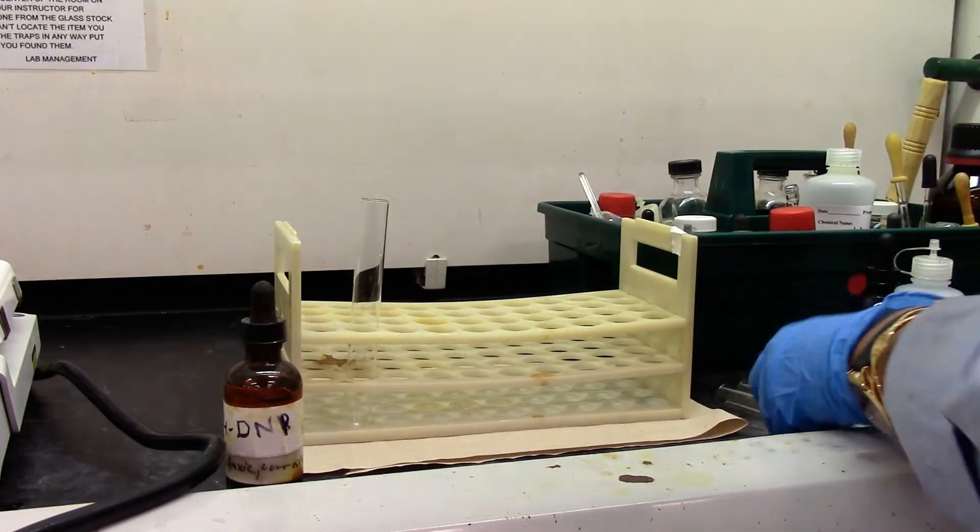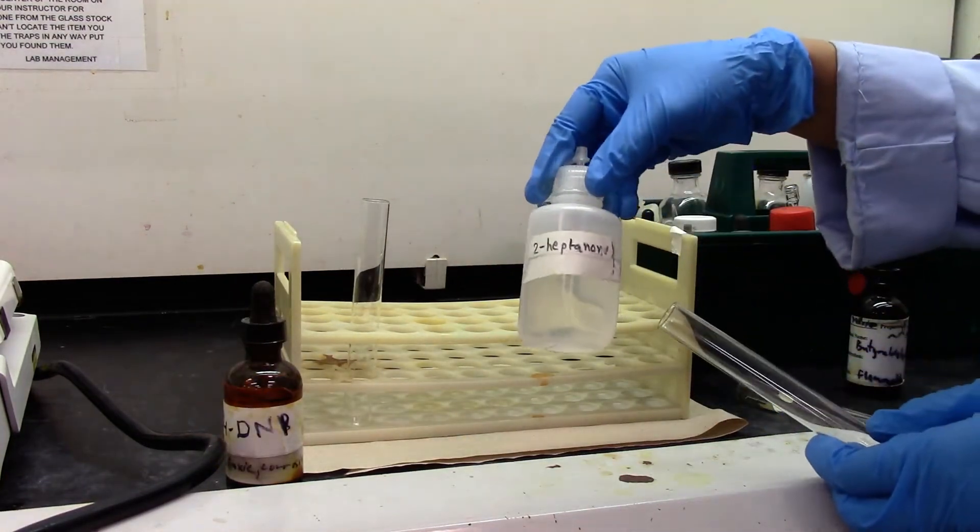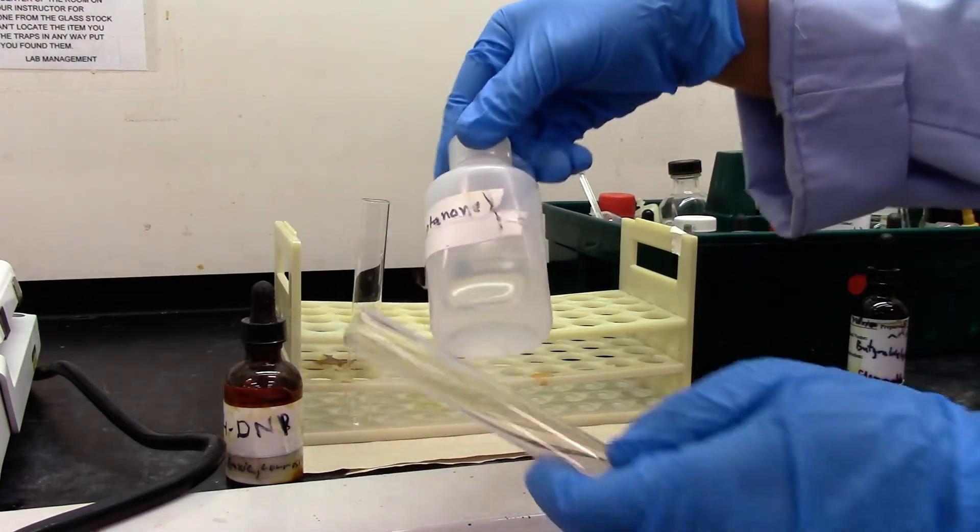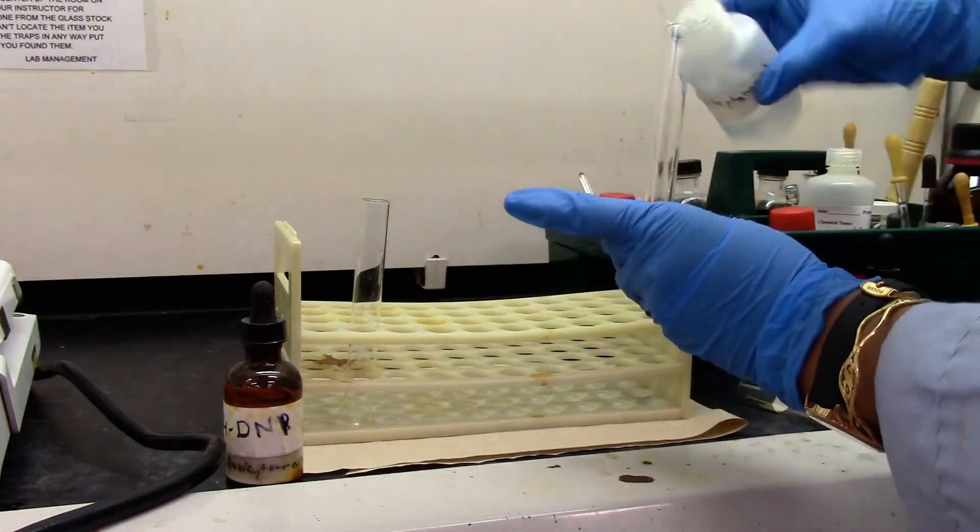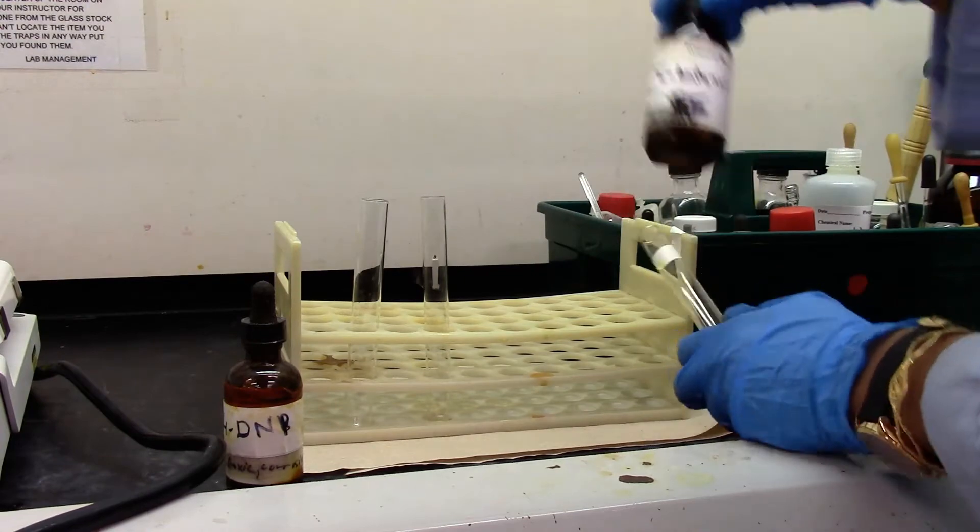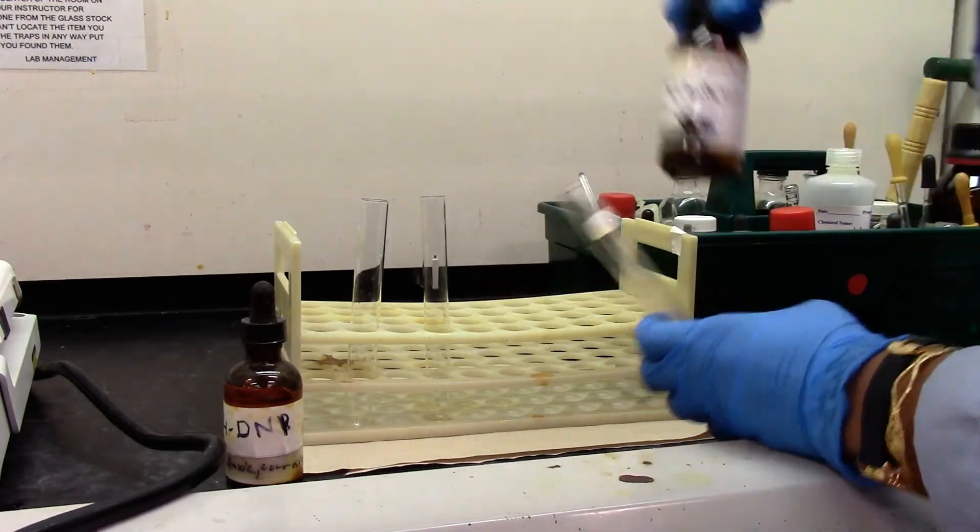That's my aldehyde sample. This is 2-heptanone, my ketone. For a negative test, I'm taking an alcohol, butanol.